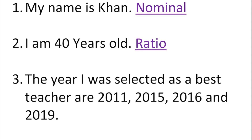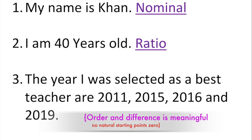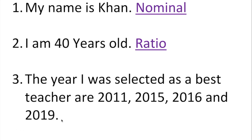The years I was elected as best teacher were 2011, 2015, 2016, and 2019. So what kind of level of measurement is this? By now you know — it's going to be interval level of measurement. Interval, because years are involved, you can order them, and the difference is meaningful. That's interval level.